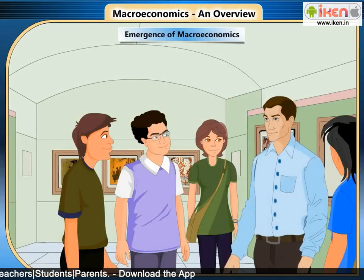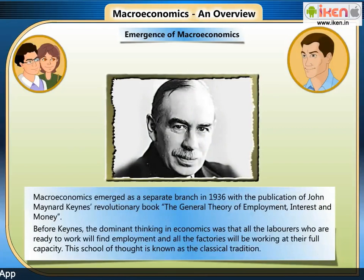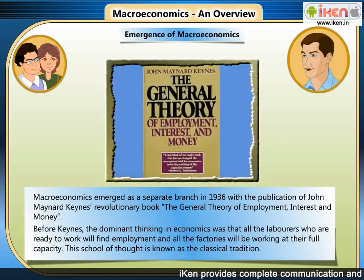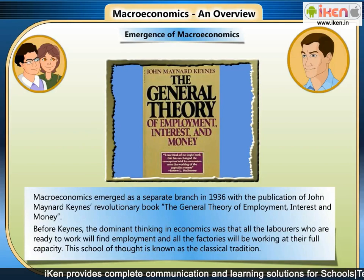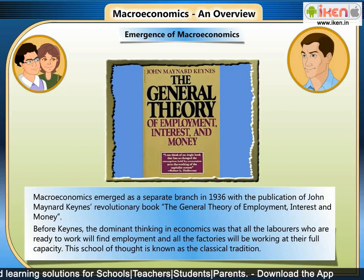But how did the concept of macroeconomics emerge? Who coined the term macroeconomics? Macroeconomics emerged as a separate branch in 1936 with the publication of John Maynard Keynes's revolutionary book, 'The General Theory of Employment, Interest and Money.' Before Keynes, the dominant thinking in economics was that all laborers who are ready to work will find employment and all factories will be working at their full capacity. This school of thought is known as the classical tradition.